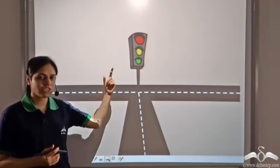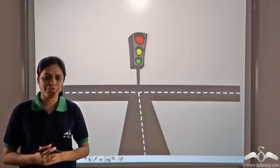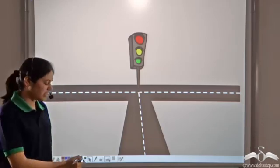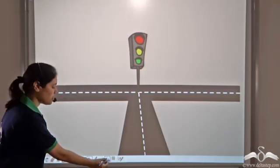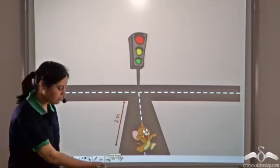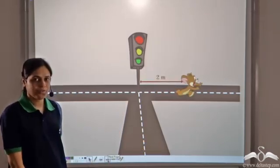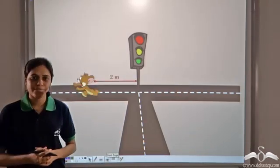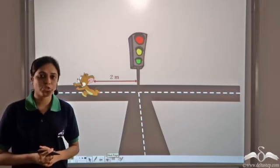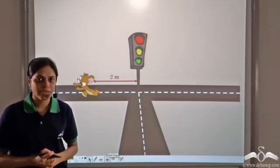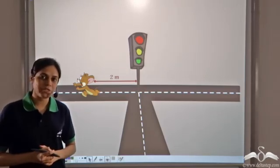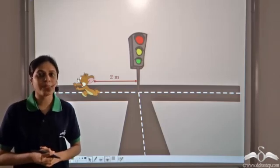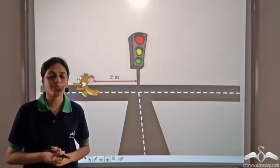But when he reaches there, he is really confused. Can you guess why? Because Jerry could be standing here, or here, or here, and this time also Tom missed out on Jerry. Although he had some information about Jerry's position, he did not have complete information about Jerry's position.